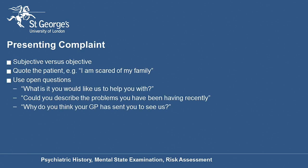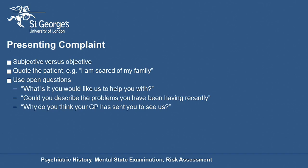First of all is the presenting complaint, sometimes called the circumstances of admission. This is divided into two parts: the subjective and objective part. The subjective part is the patient's account of why they're in hospital or why they're in front of you, and it's good to quote exactly what the patient says. An example might be: 'I'm scared of my family.' The objective presenting complaint is what the clinician makes of the situation, so in this example it might be that the patient is experiencing persecutory ideation in relation to their family. To establish what the presenting complaint is, you'll need to use open questions to help the person communicate, for example: 'What is it you'd like us to help you with?', 'Can you describe the problems you've been having recently?', or 'Why do you think your GP has sent you to see us?'